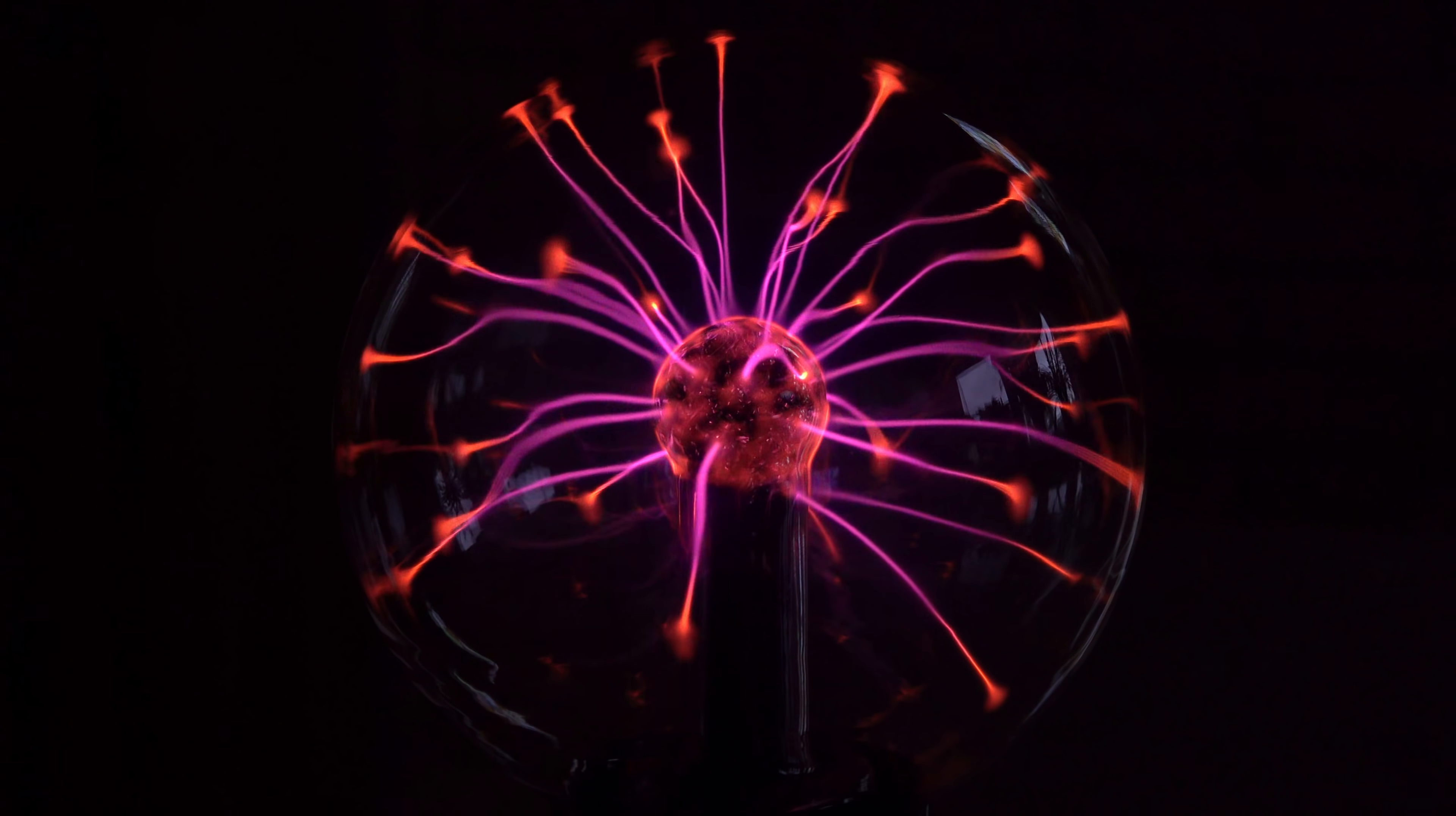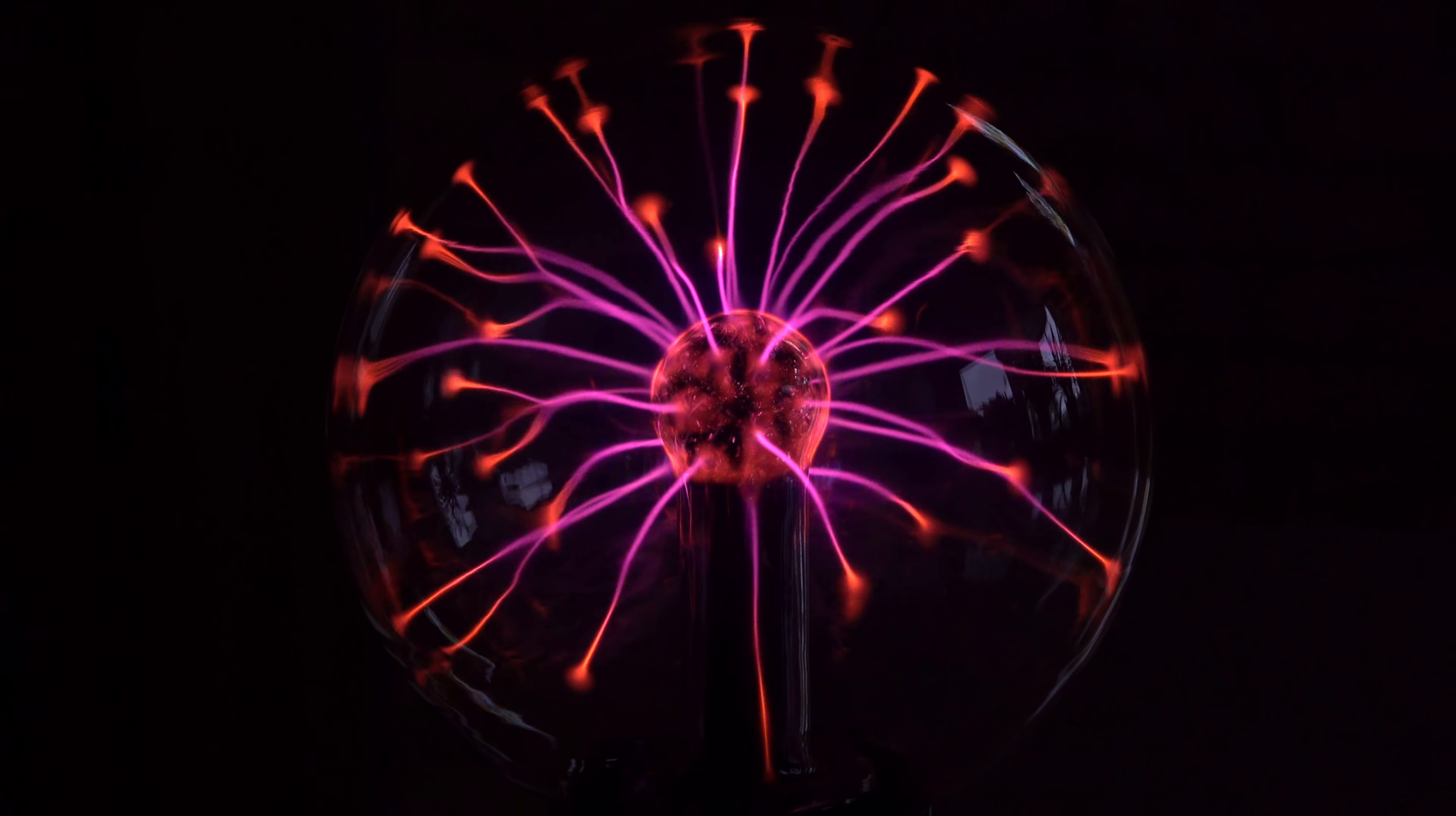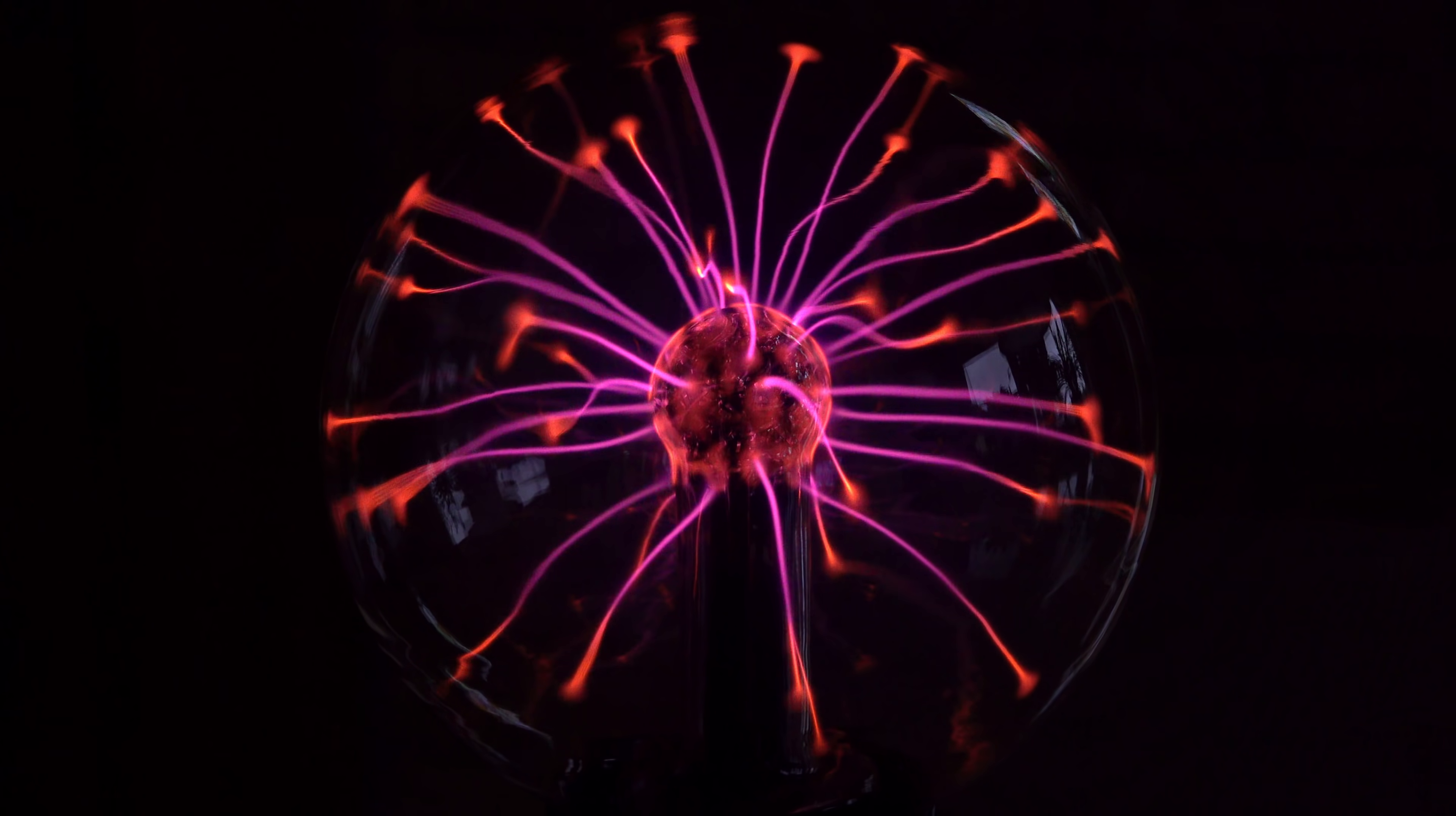Now for the smaller one which has violet streamers with orange tips. Surely it has a different gas mixture.